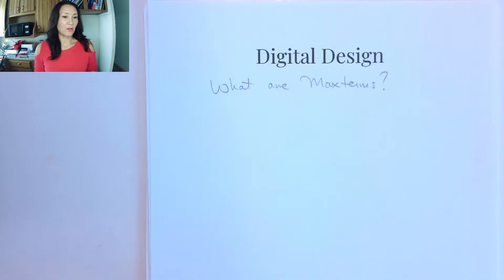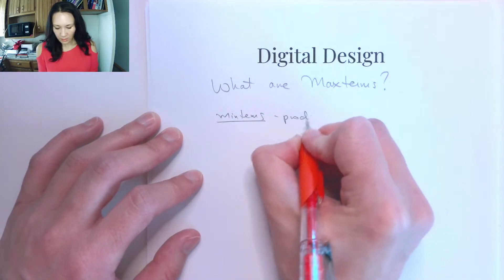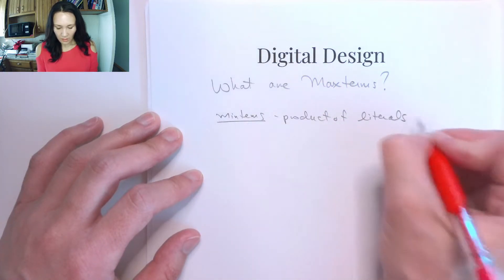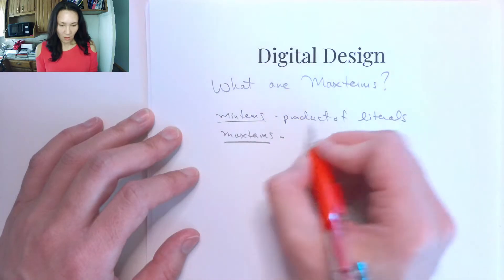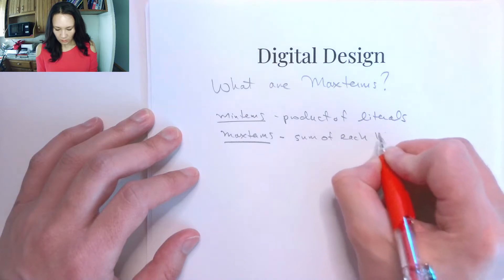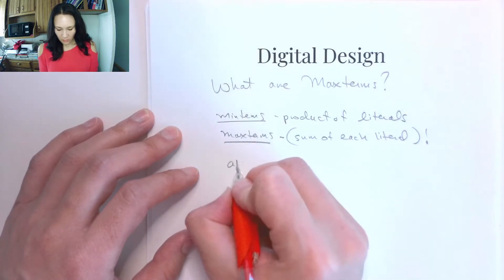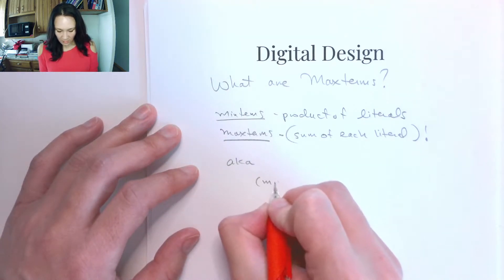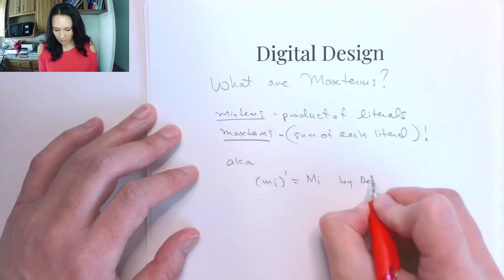Now that we can negate entire functions and express functions in both sum of product form, which is in terms of the min terms, and product of sum form, I want to define max terms. Recall that min terms are a product of literals, like a, b', c. The max terms are the sum of each literal but complemented. The complement of a min term gives the max term by DeMorgan's.